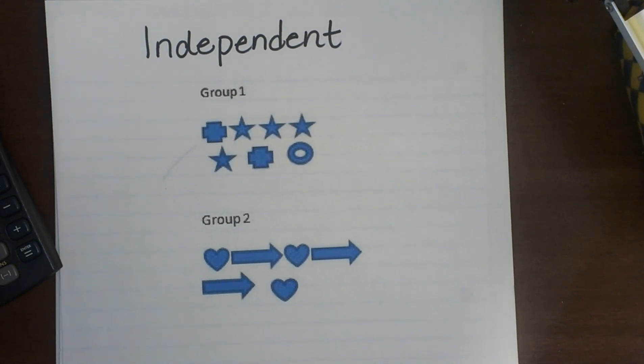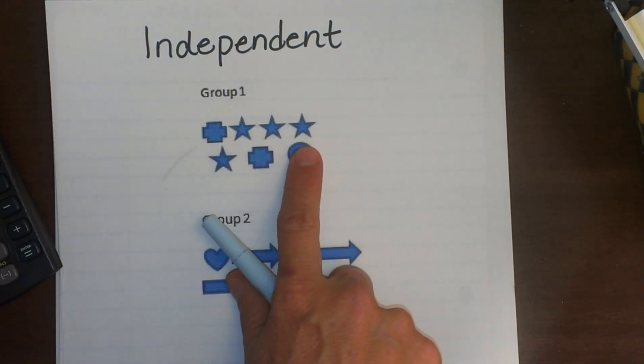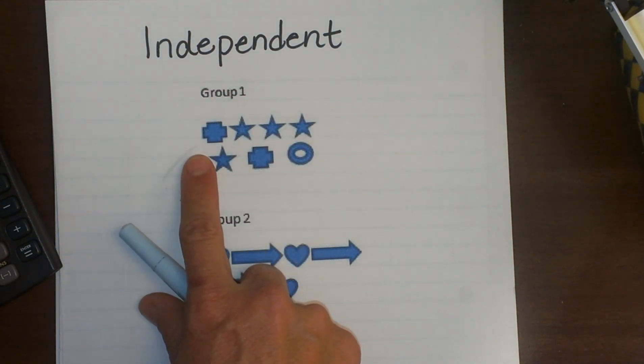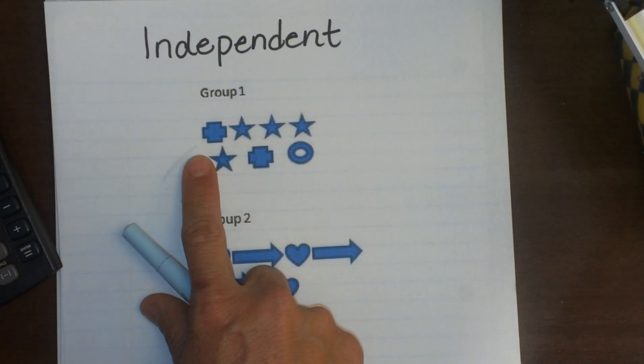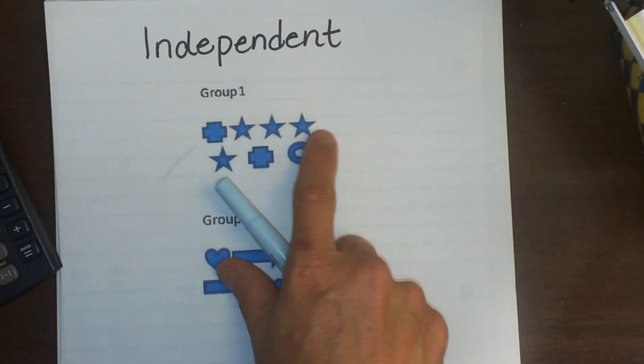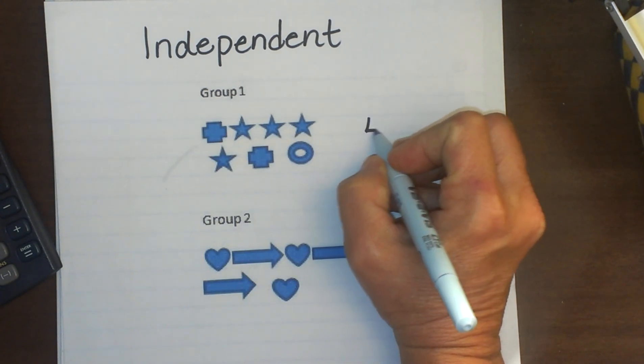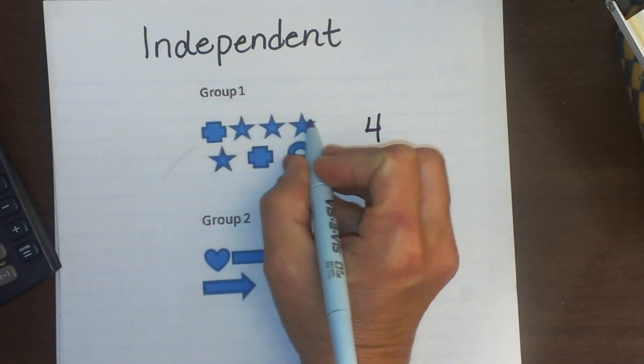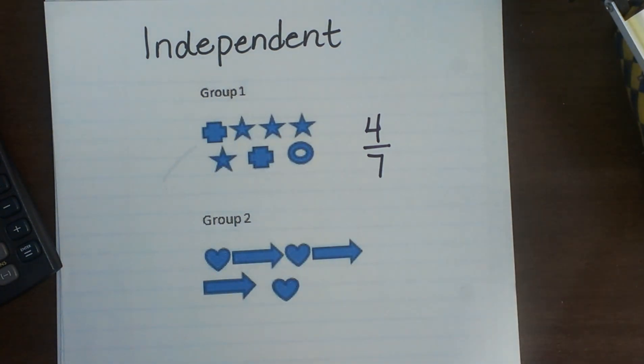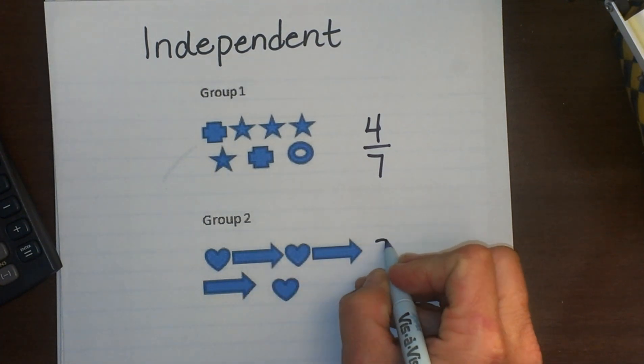What is the probability of drawing a star from the first group followed by an arrow from the second group? Let us just look at the separate probabilities of each occurring. So the probability of drawing a star from the first group would be four out of seven possibilities. What is the probability of drawing an arrow out of the second one? Well we have three out of six.